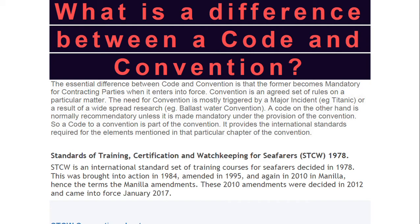A code is a part of the convention. It provides the international standards required for elements mentioned in a particular chapter of the convention. References to particular codes are found within the convention itself. Examples of codes include: LSA code, FFA code, ISPS code, and ISM code.